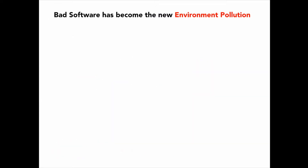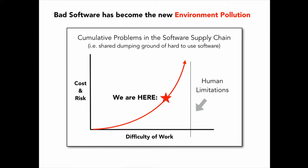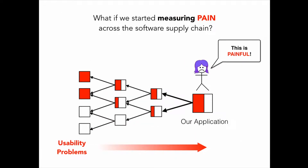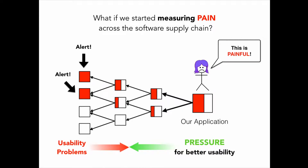Bad software has kind of become the new form of environment pollution. We've got this kind of shared dumping ground of crappy software out there. It's really hard to tell what stuff is good, what stuff sucks, what stuff needs some love. We've always got this hard constraint of our human limitations. As complexity keeps increasing and we don't have a way to manage and design for that, it's becoming a bigger and bigger problem in our industry. What if we started measuring pain across the software supply chain, raising alerts about the things causing the most pain, and created pressure for better usability across the software supply chain?